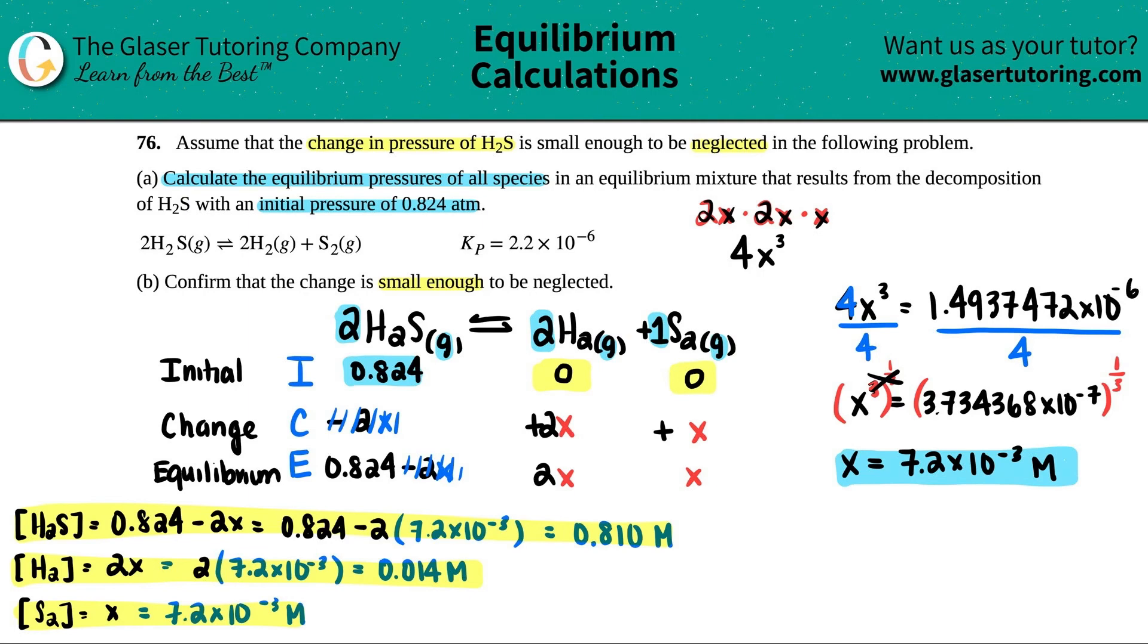Another thing that teachers like to do is the 5% rule, in which you take your X value that you found, and divide it by your initial value. Times it by 100, because you want to turn it into a percent. The percent has to be 5% or less. So let's do that way. So if I just quickly do 7.2 times 10 to the negative three, divided by 0.824, and times it by 100.